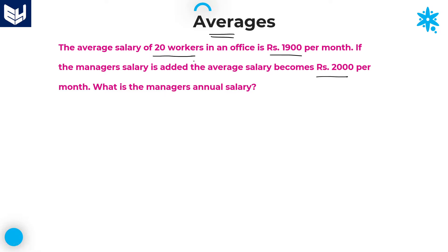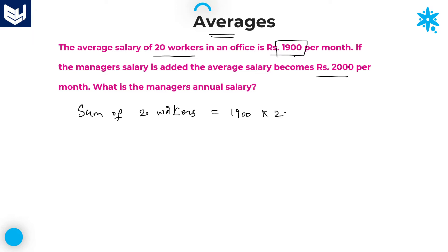Initially, he is talking about the average salary of 20 workers in an office. The average salary of 20 workers is given as 1,900. If the average is 1,900, then the sum of 20 workers is equal to average into number of workers, that is 1,900 × 20, which equals 38,000.